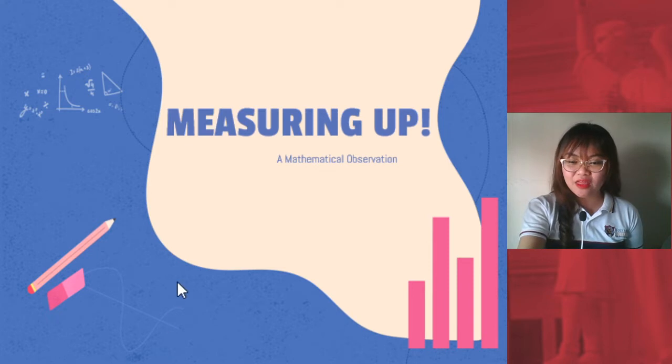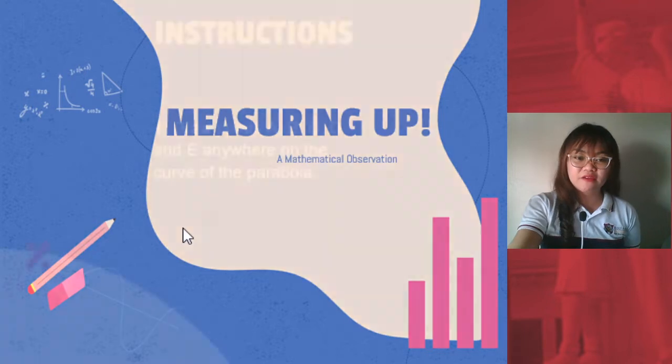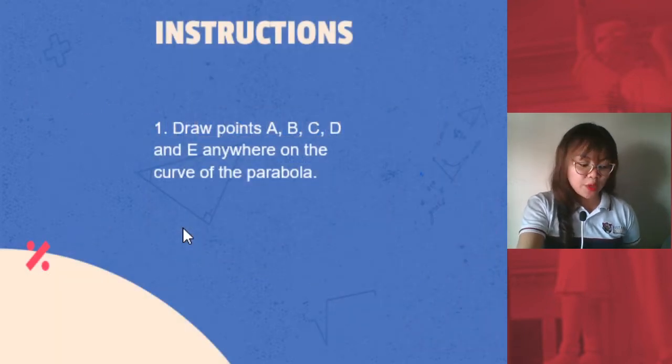Let's begin with the first set of instructions. Here in Measuring Up, it says that we have to draw points A, B, C, D, and E anywhere on the curve of the parabola.